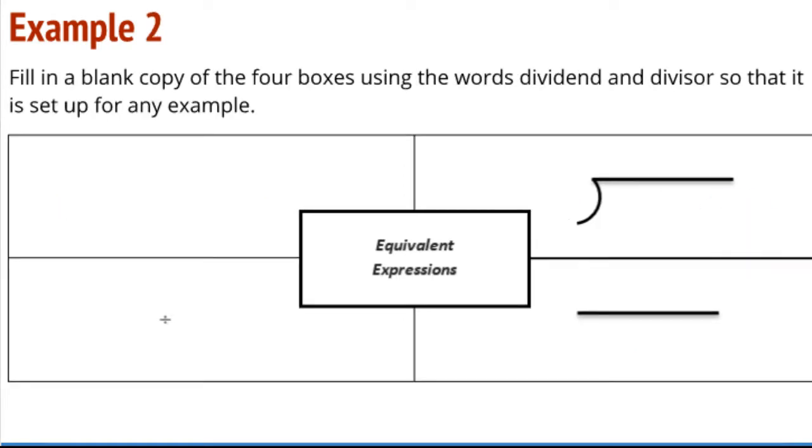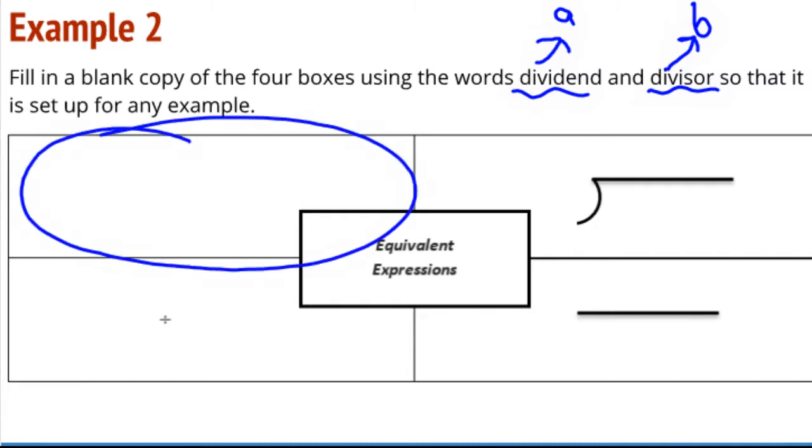In this next example, we are filling in the four boxes and we're using the words dividend and divisor. This is set up for any example. So we are now looking at a general example. We could even play with variables if we wanted to. We could say that A is the dividend and B is the divisor. But for now, we can just focus on the words.